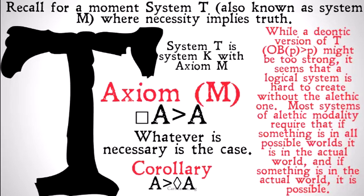And, if something is in the actual world, it is, in fact, possible, which are just the two corollaries of Axiom M. So, while we might be able to get away with it out of deontic logic, it seems very strange for us to offer a modal logic that does not include Axiom T.